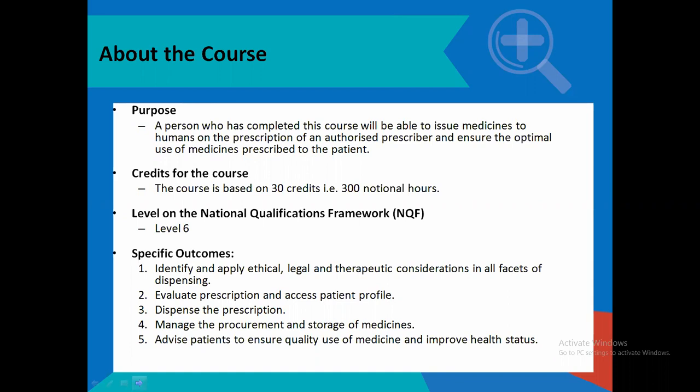The course has five specific outcomes. The first focuses on the legal, ethical, and therapeutic considerations of dispensing. The second deals with evaluating a prescription and being able to access a patient profile. Number three is being able to dispense the prescription. Number four is managing the procurement and storage of medicine. Number five deals with patient advice to ensure the quality use of medicines and improved healthcare. Today's activity touches on numbers three and five.